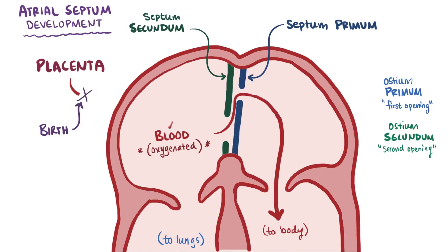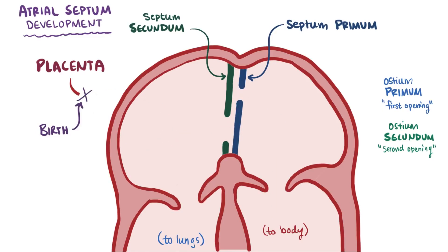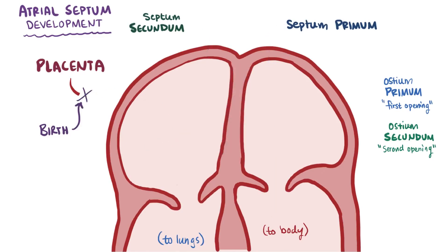At birth, the septum secundum and septum primum slap shut and then fuse and close off this foramen ovale so we can rely on our own lungs for oxygen.